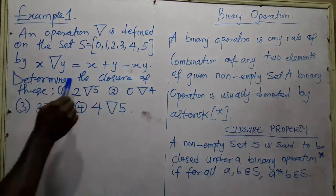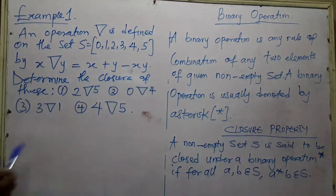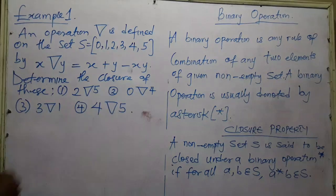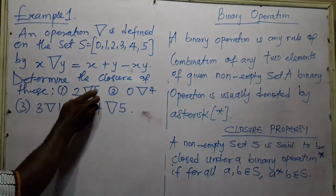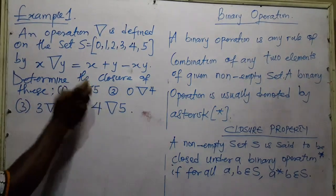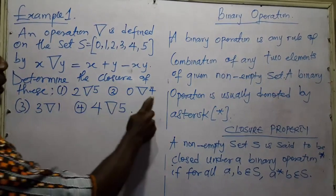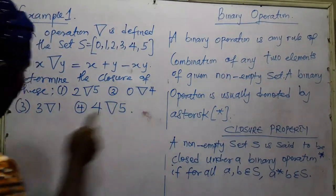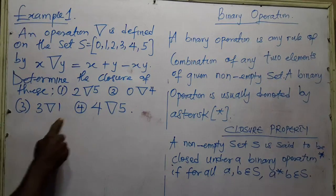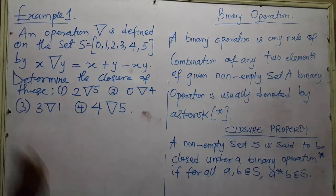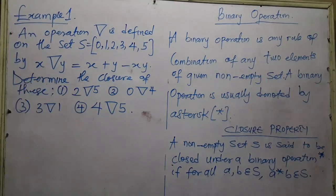Determine the closure of the following: one, two operation five; zero operation four; three operation one; four operation five. We are going to use this operation to get each value and determine which ones are closed and which are not closed.